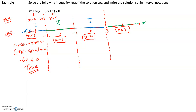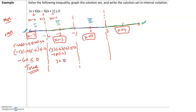For interval 2, plugging in x equals negative 3: (negative 3 + 6)(negative 3 − 3)(negative 3 + 1). That's 3 times negative 6 times negative 2, which is negative 18 times negative 2 — that's positive 36. Is 36 less than 0? No, that is a false statement.